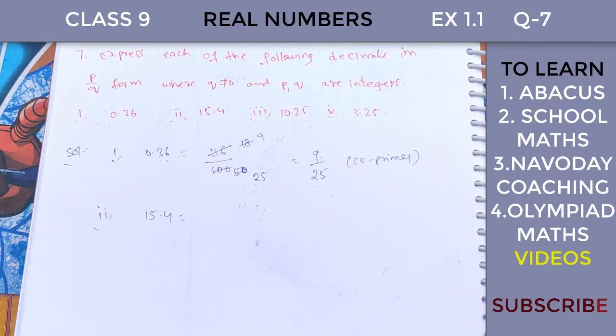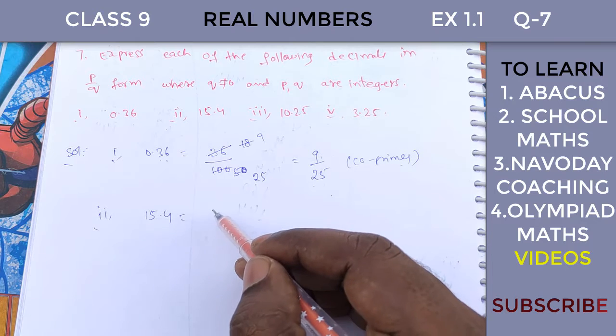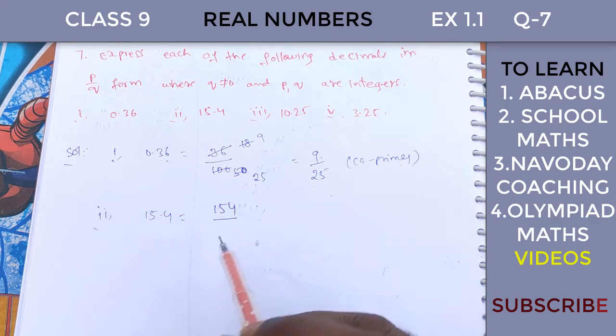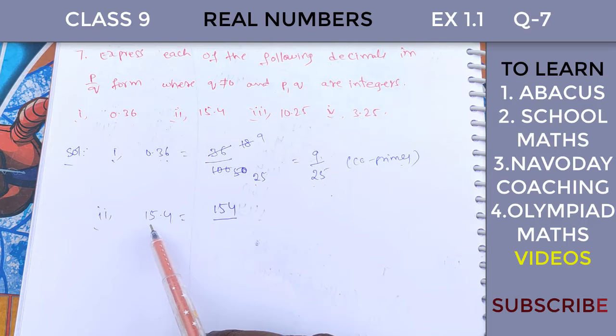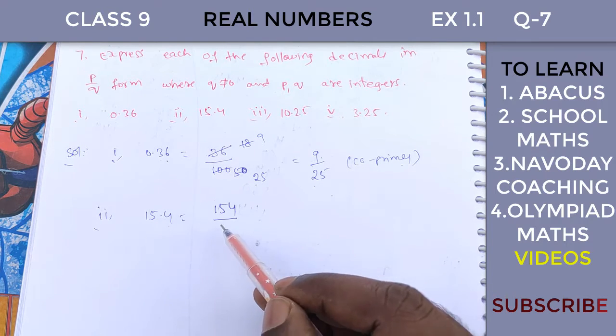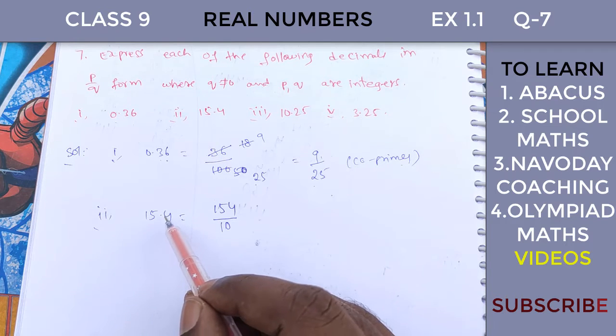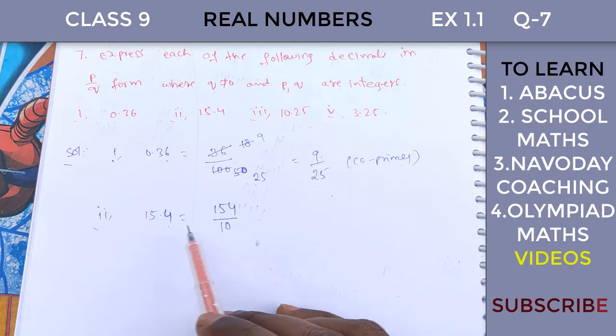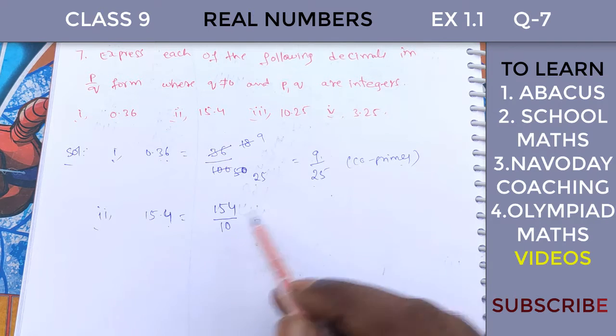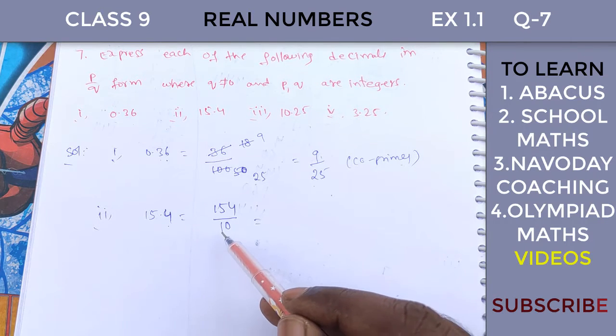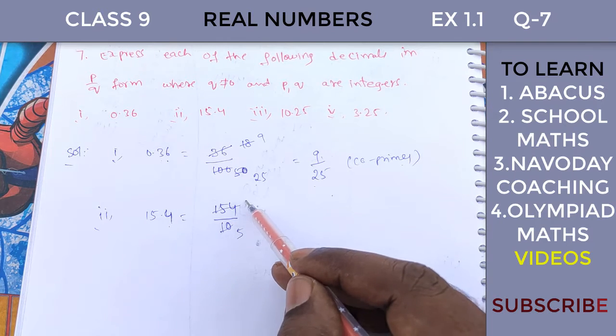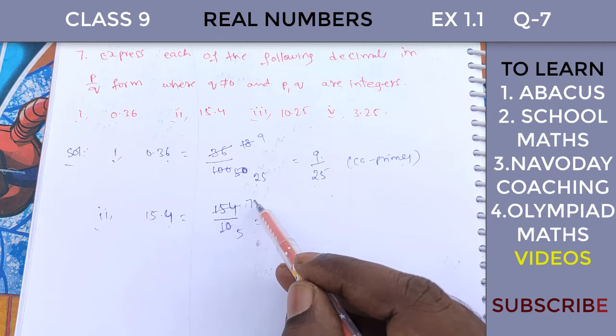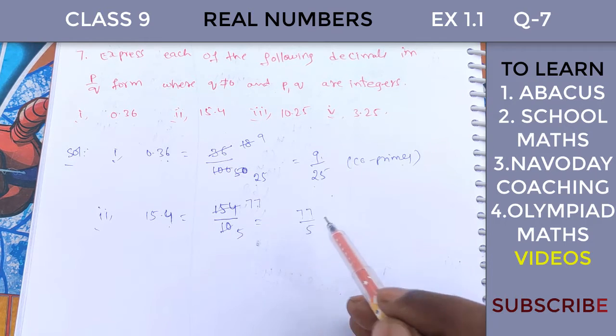Next, 15.4. This is the fraction 154 over 10. For decimals, one decimal place means denominator 10, two places mean 100. That's the decimal to fraction conversion. We cancel by 2: two 7s are 14, so it's 77 by 5 in simplified form.